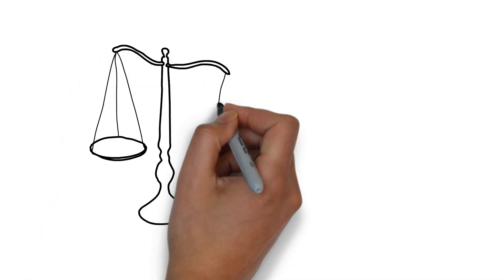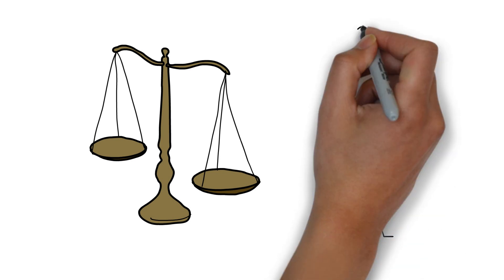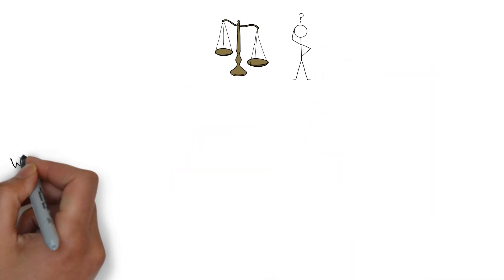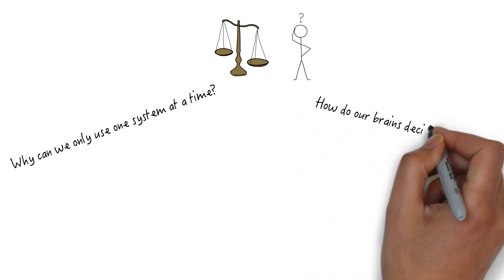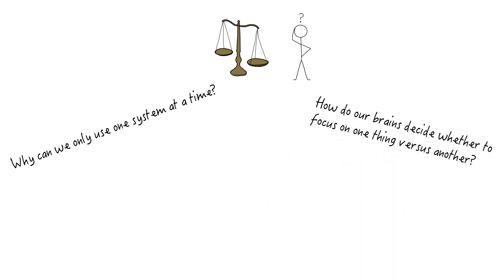The interesting question then becomes why these changes in the balance happen. Why can we only use one system at a time? How does our brain decide whether to focus on one task instead of another?